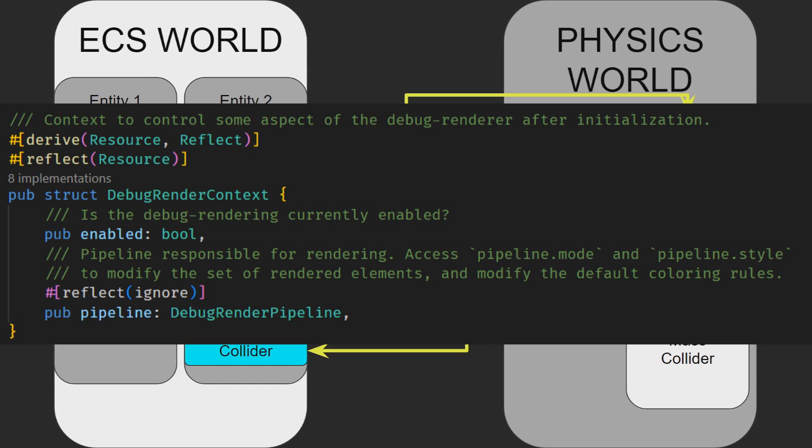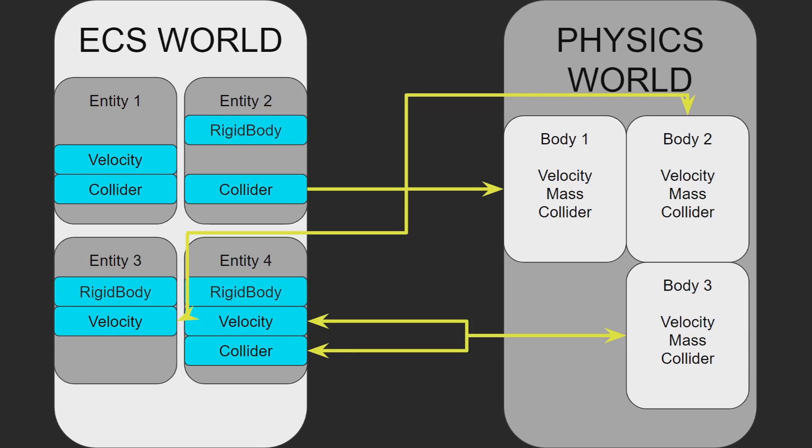And finally, there is the debug rendering context. This is the settings for the debug renderer that is enabled with the debug rendering feature. It allows you to toggle the rendering on and off, as well as what things get rendered, such as rays, collisions, AABB, bounding boxes, etc. The debug rendering is behind a feature, since it can significantly slow down the time of execution on the code.